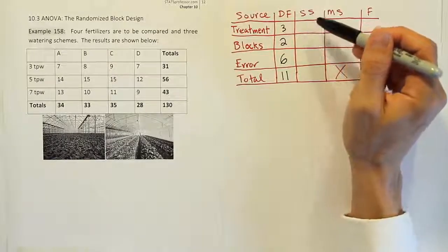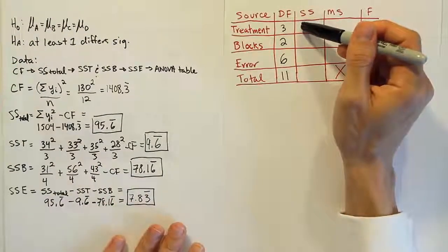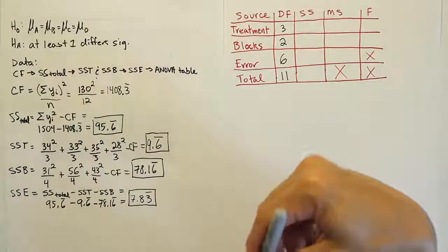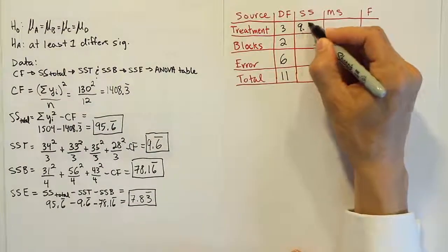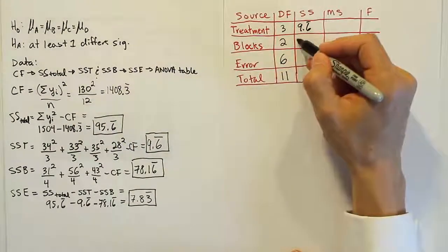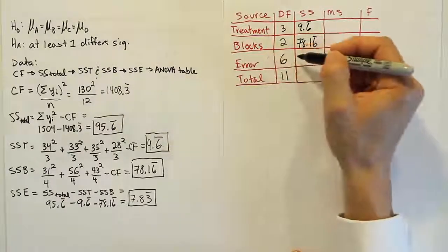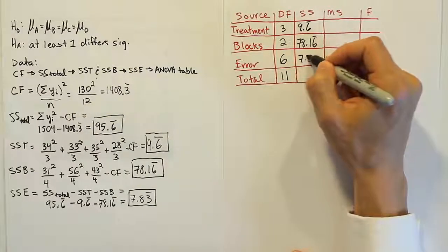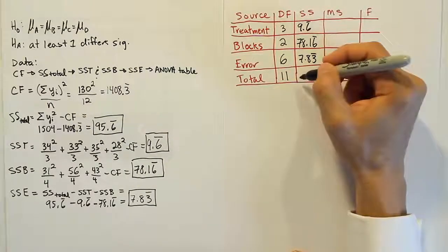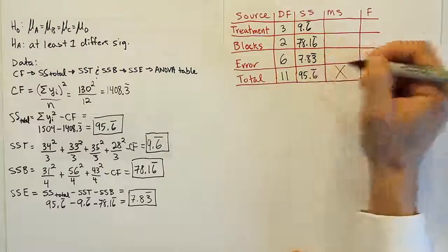Let's do the sum of squares then next. Sum of squares next is going to come from the work that we did earlier when we did our data step. So, sum of squares for treatment, SST is 9.6 repeating. The blocks, SSB, was 78.16 repeating. The error, the SSE, was 7.83 repeating. And the total sum of squares was 95.6 repeating.